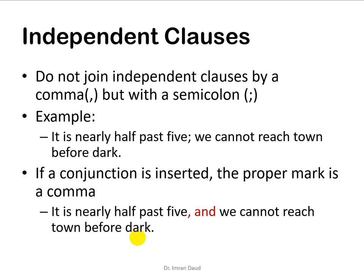If you have independent clauses within one sentence, you do not join them with a comma but with a semicolon. For example: 'It is nearly half past five; we cannot reach town before dark.' This forms one complete sentence, but both clauses are independent, so a semicolon is used. If a conjunction is inserted, the proper mark is a comma: 'It is nearly half past five, and we cannot reach town before dark.' There are several ways to use commas correctly, and that concludes this lecture. Thank you very much.